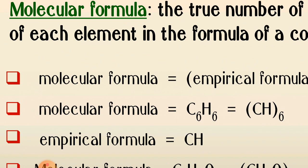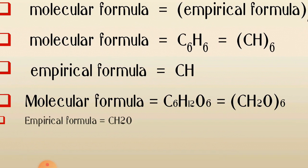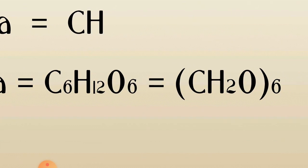For example, the empirical formula for benzene is CH and the molecular formula is C₆H₆. The molecular formula tells us the total amount, while empirical formula just gives the ratio of carbon and hydrogen. For glucose, the molecular formula is C₆H₁₂O₆, which can be written as CH₂O × 6.